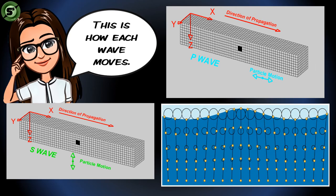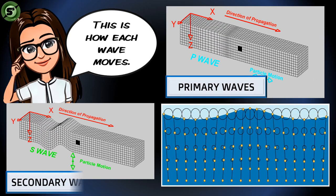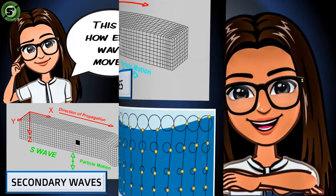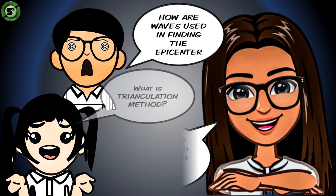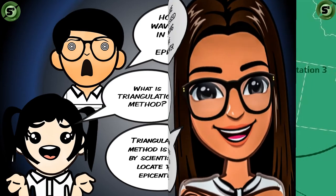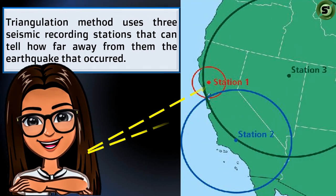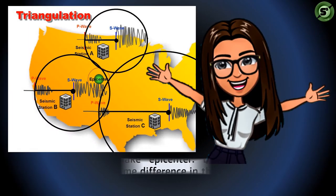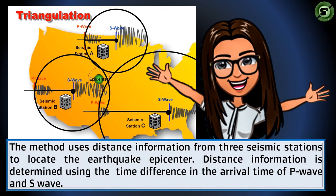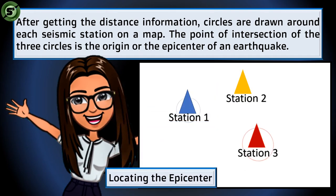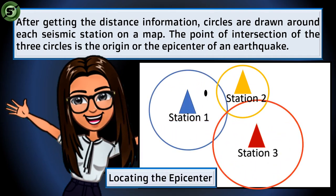We have a separate lesson on seismic waves that will give a more detailed explanation. These animations show how each kind of wave moves: primary waves, secondary waves, and surface waves. The triangulation method uses three seismic recording stations. Each station can tell how far from them the earthquake occurred. Distance information is determined by using the time difference in the arrival of P-waves and S-waves. Circles are drawn around each seismic station on a map, and the point where the three circles intersect is the location of the earthquake epicenter — the origin of the earthquake.